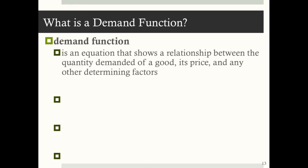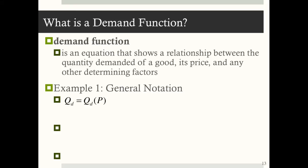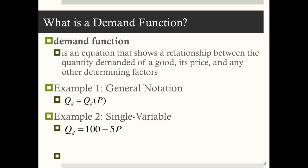A demand function, by definition, is an equation that shows a relationship between the quantity demanded of a good, its price, and any other determining factors. You may see it in general notation where Q sub D depends on P, or as a specific linear single-variable equation such as Q sub D equals A minus B times P, which says quantity demanded depends on price in this particular way. Sometimes you'll be given multi-variable equations where quantity demanded depends on price and income.